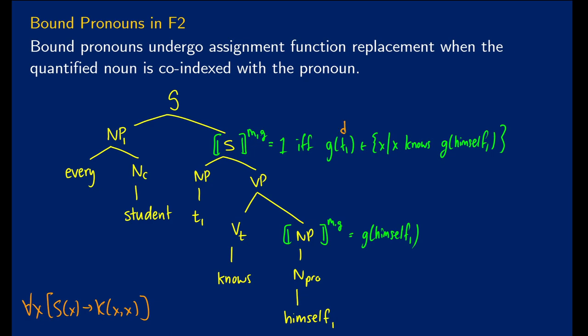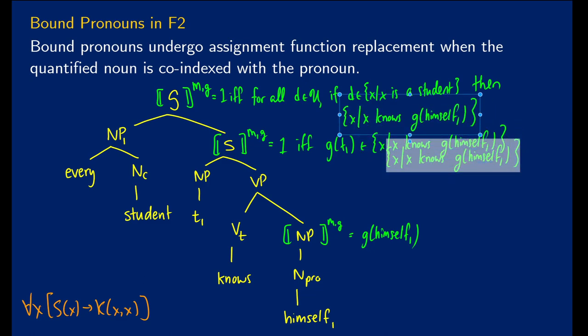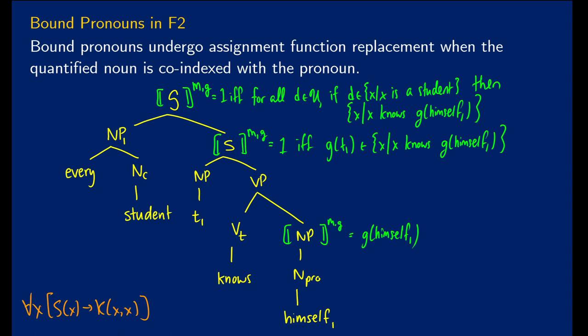So we can see here that eventually, when we do our little binding, himself and G of one are both going to go to D. So now with every student, we're now just doing our little shift here in terms of assignment function re-evaluation. So this is going to be true if now we're going to say because it's every student or all D in our universe. If D is in the set of X, such that X is a student, then we're just going to take this bit right down here. And we're going to copy and paste it here. We're going to make adjustments.